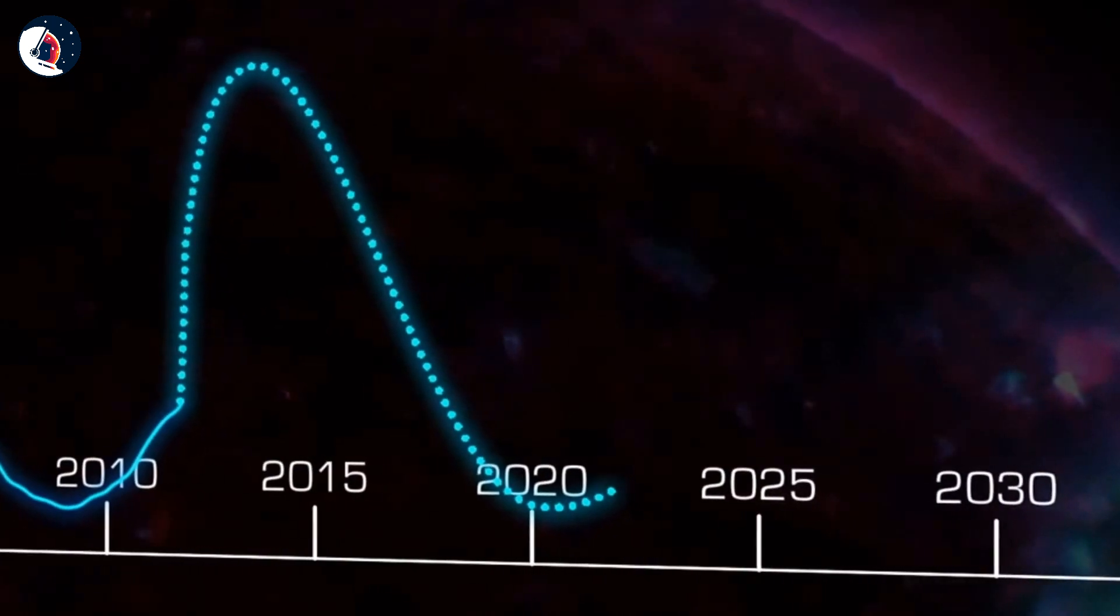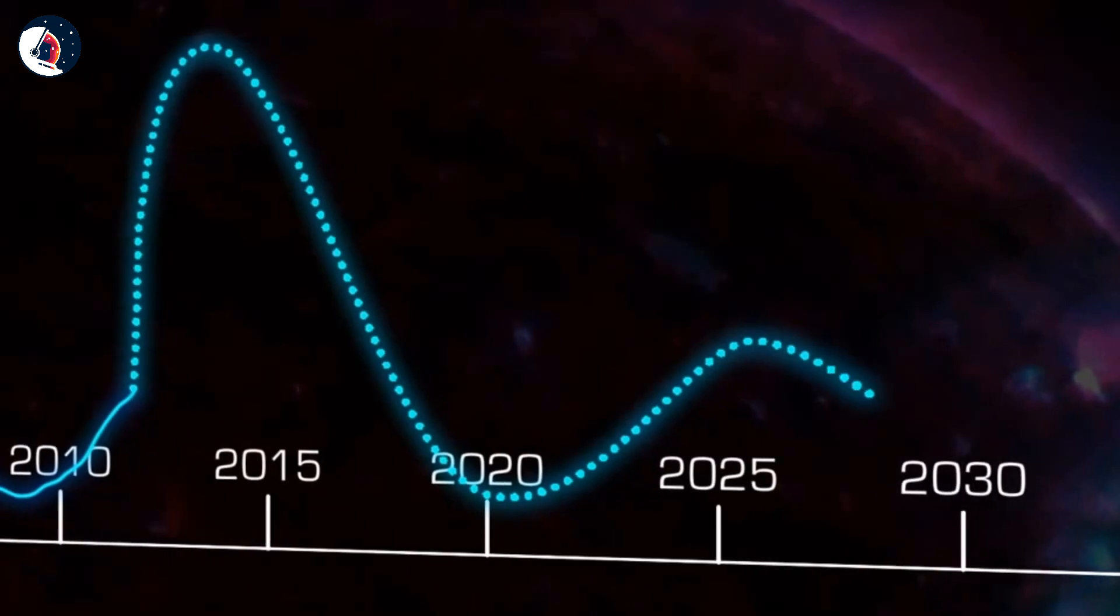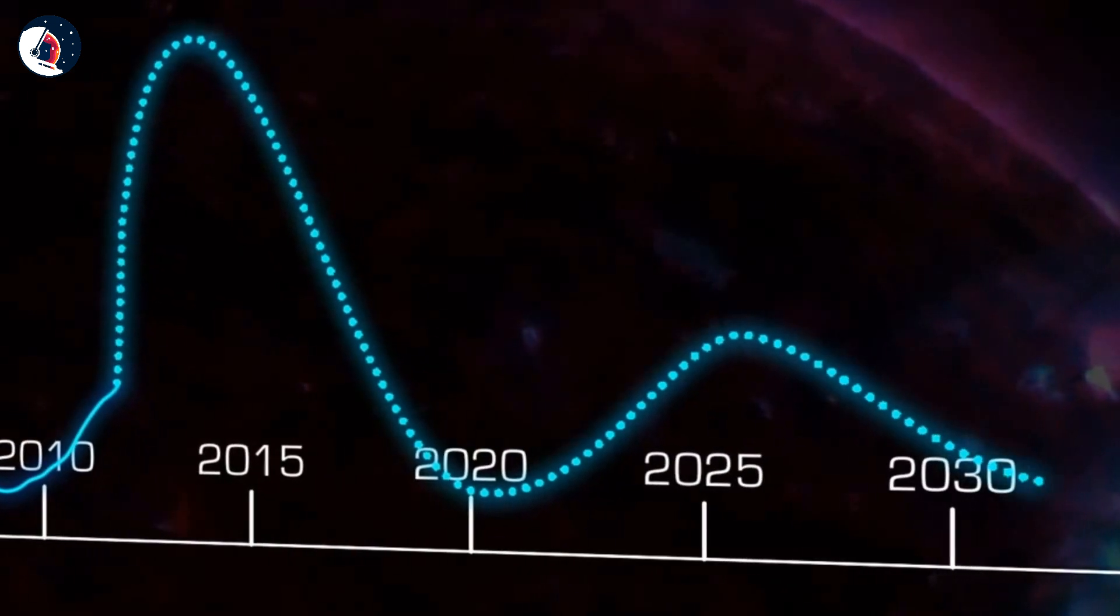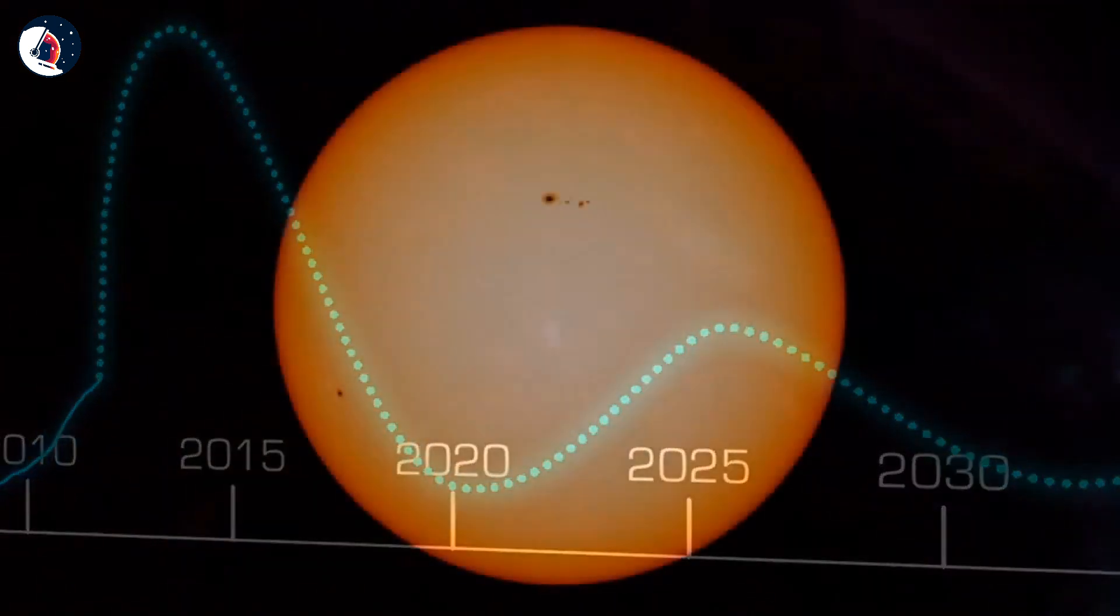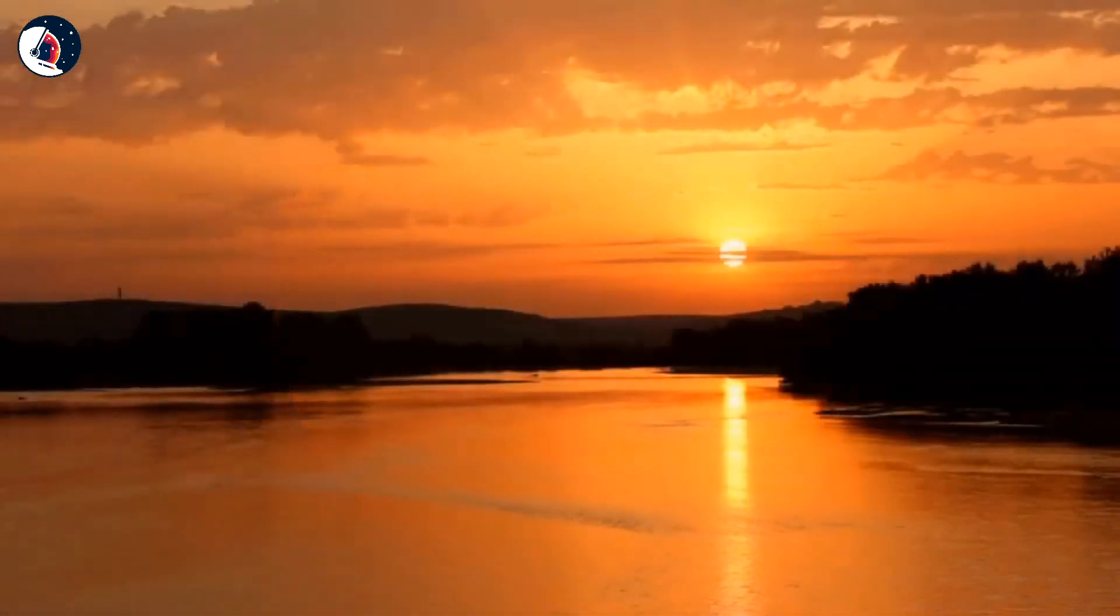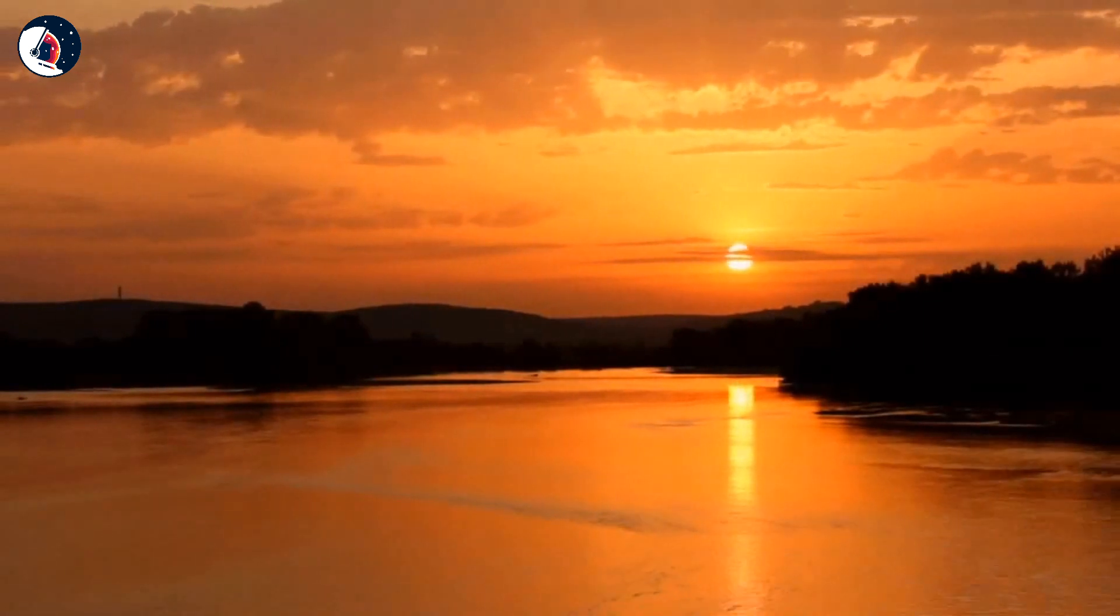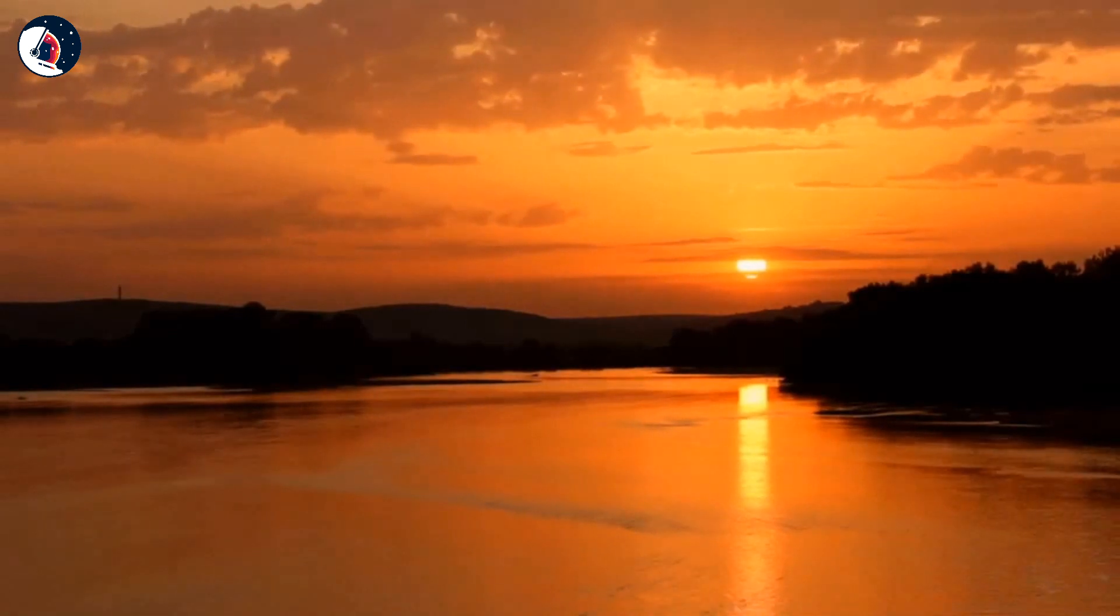The slower than expected progress of this sunspot cycle has led some to speculate that the next sunspot cycle might be very minimal, with few sunspots even at solar maximum. It is still far too early to know, but even if this is the case, it has happened before and isn't something to worry about. It just means that the sun would briefly be a little closer to the unchanging orb it looks like from the ground.